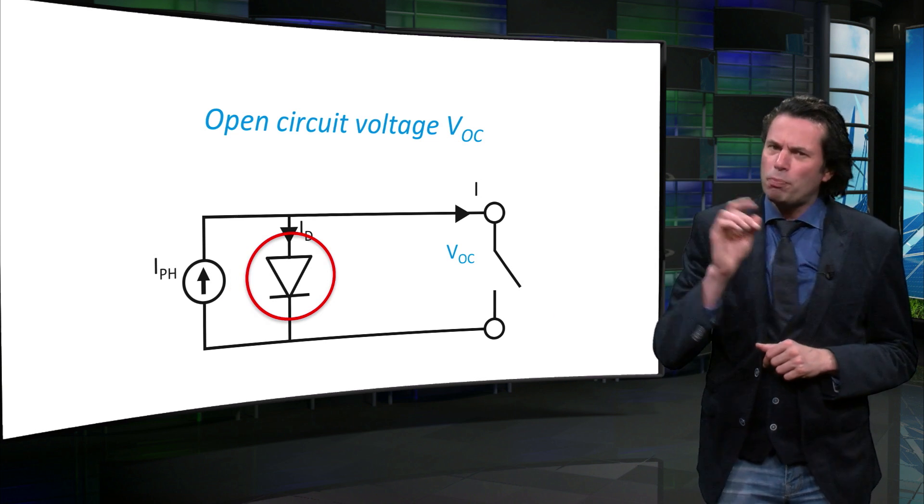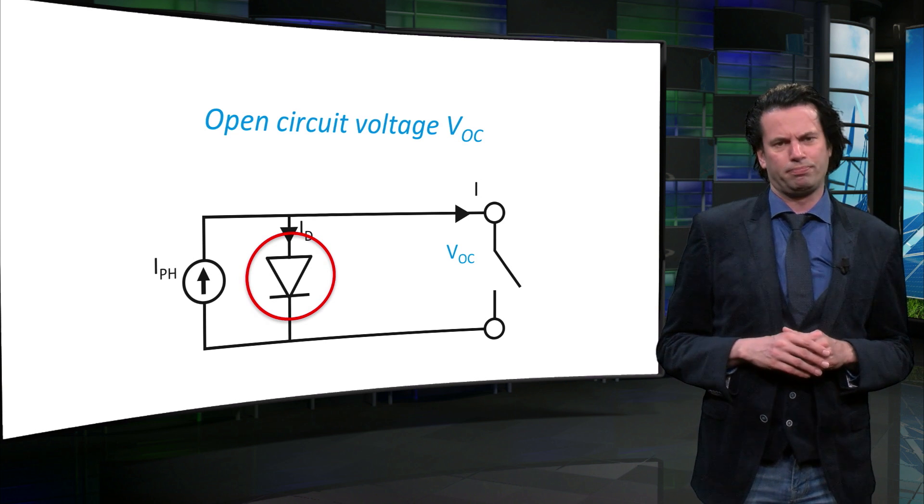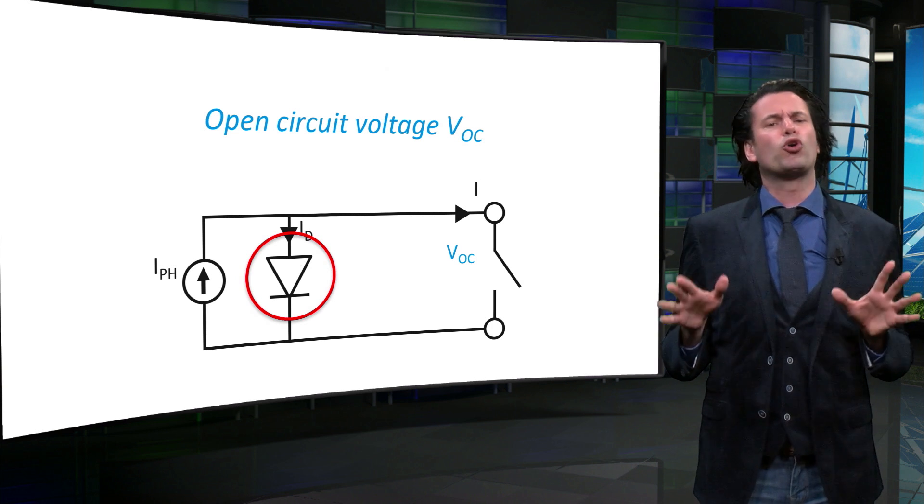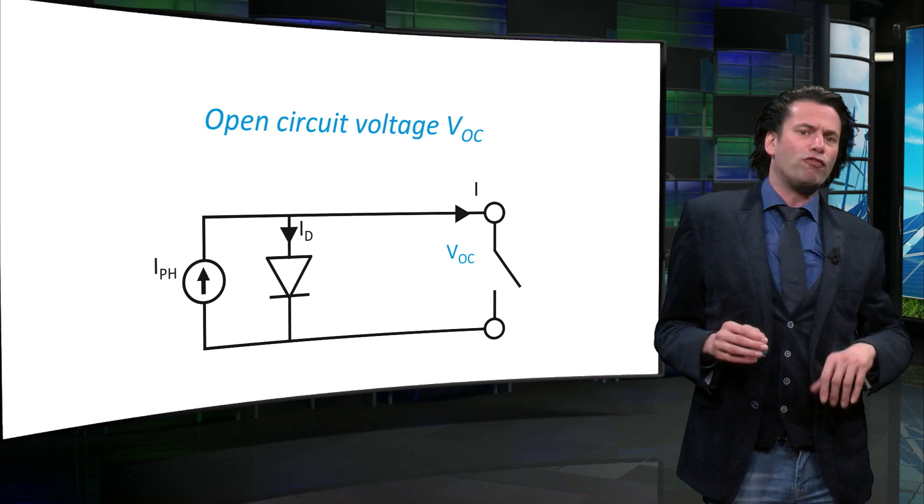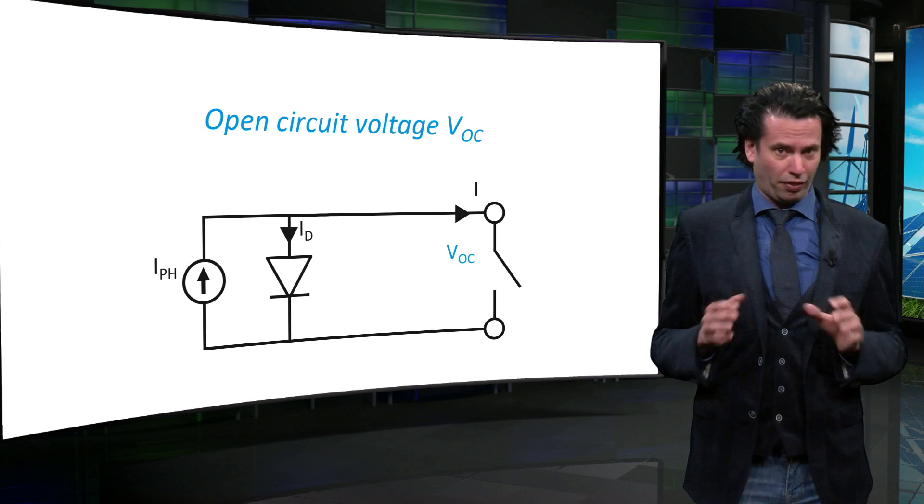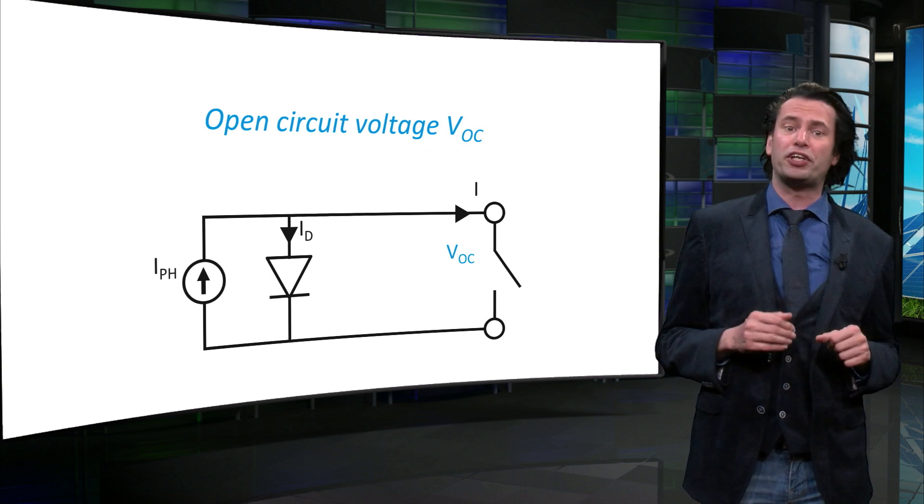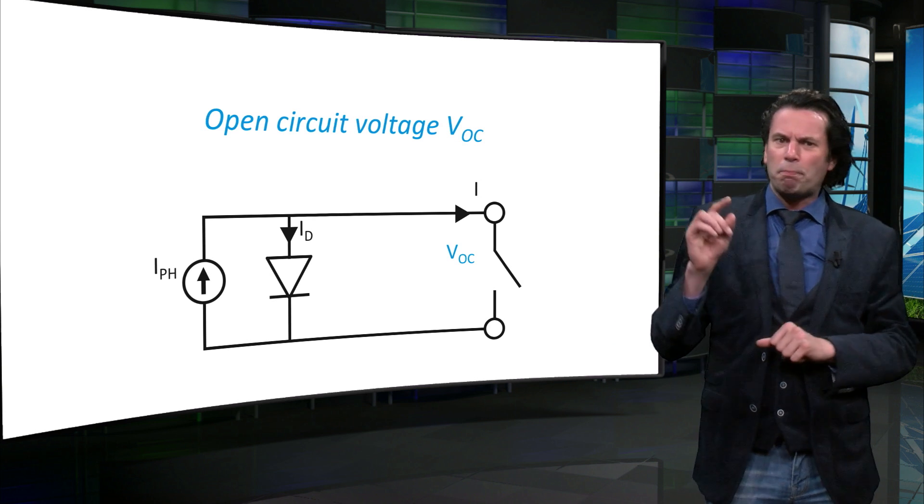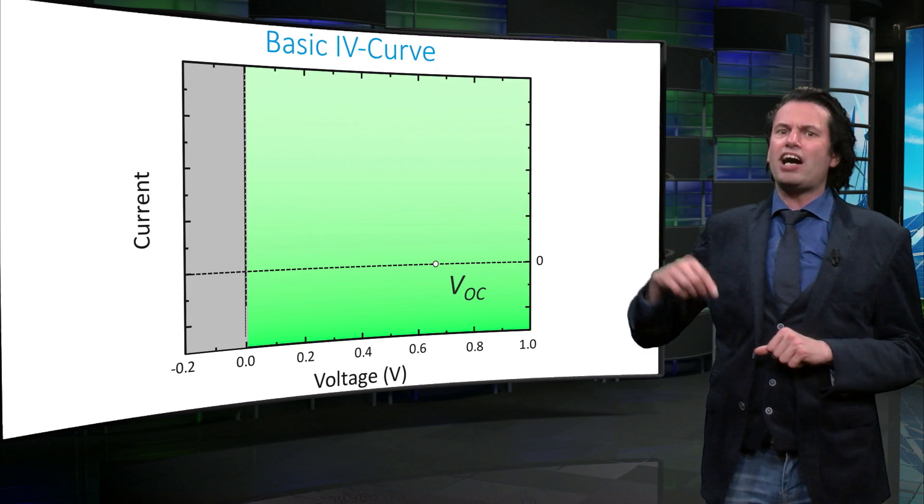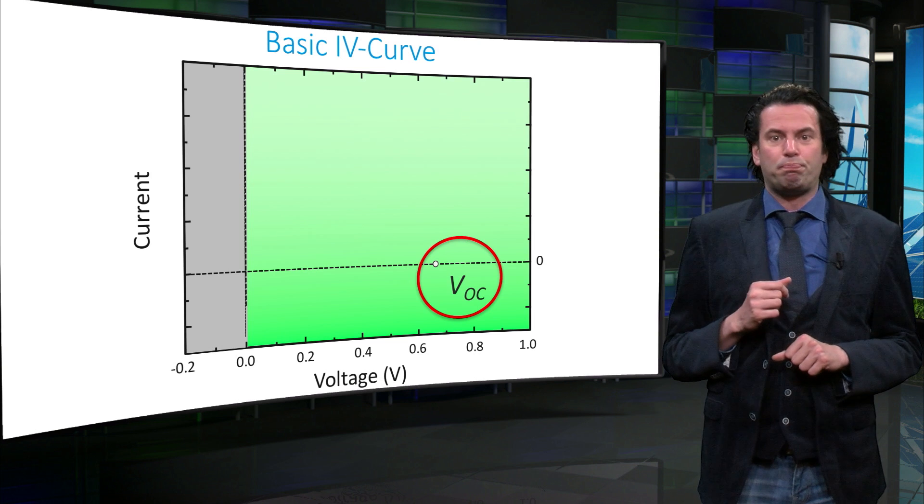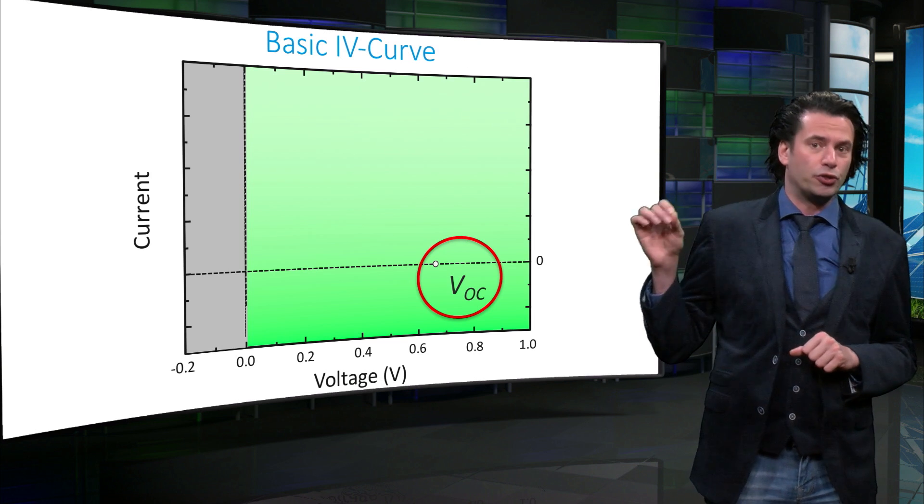Under which operation condition is the device producing electrical power? For that we will define some so-called external parameters. Here we can see the situation of open-circuit voltage. Nothing is connected to the cell. The cell is only producing voltage and no current. This is an important characteristic of a solar cell. The IV curve is at a point on the horizontal axis of the graph where current is zero.